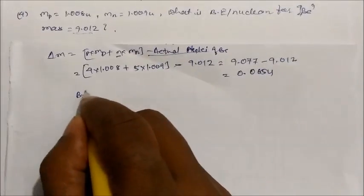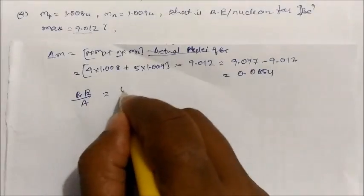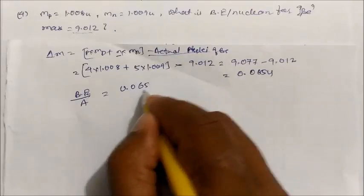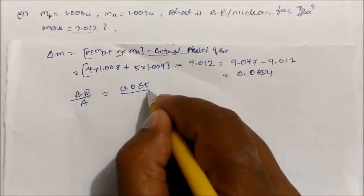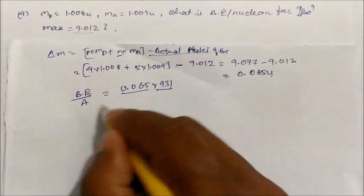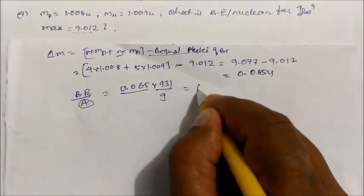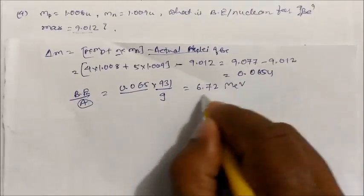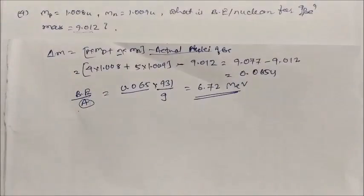The binding energy per nucleon: total binding energy is 0.065 u × 931 MeV/u, divided by mass number A = 9. On solving you will get 6.72 MeV per nucleon. So this is the binding energy per nucleon for the beryllium atom.